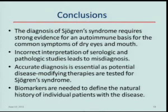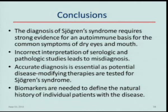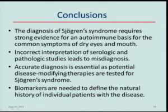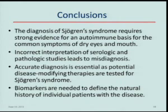In conclusion, the diagnosis of Sjogren's syndrome should require strong evidence for an autoimmune basis for the relatively common symptoms of dry eyes and dry mouth. Incorrect interpretation of serologic and pathologic studies will lead to misdiagnosis, and these patients may be subjected to inappropriate therapies. It is very important to have an accurate diagnosis before beginning disease-modifying therapies and conducting clinical trials. We need better biomarkers to define the natural history, identify which patients are at risk of developing lymphoma, and which will have the more benign course that fortunately characterizes the majority.